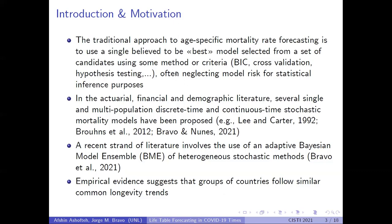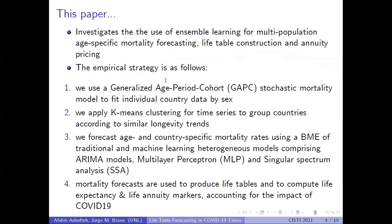Empirical evidence suggests that groups of countries tend to follow similar longevity trends, and we are going to investigate this in this paper. The purpose of this paper is to investigate the use of Bayesian model ensemble learning of multiple age-specific mortality forecasting models to build life tables and to price life insurance contracts.